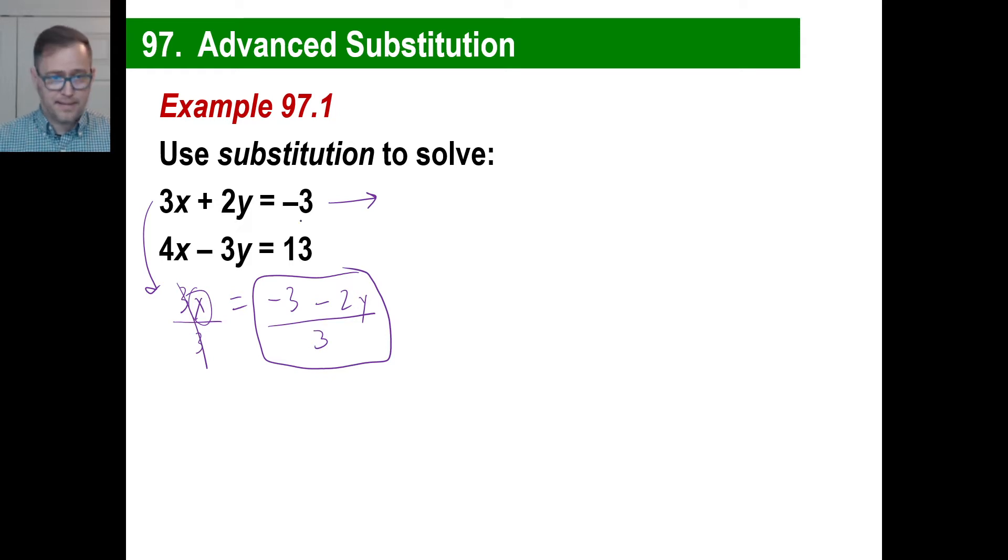So I'm going to take the X and take this equation, 4X minus 3Y equals 13. And I'm going to plop that into the X right there. It'll be loads of fun. So I've got 4 times, negative 3 minus 2Y over 3, and then minus 3Y equals 13. Now this is a real hoot. So 4 times negative 3, negative 12. And that'll be, 4 times negative 2Y is negative 8Y. And all this jazz is over 3. Minus 3Y is equal to 13.